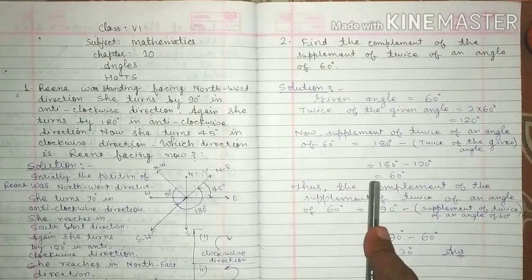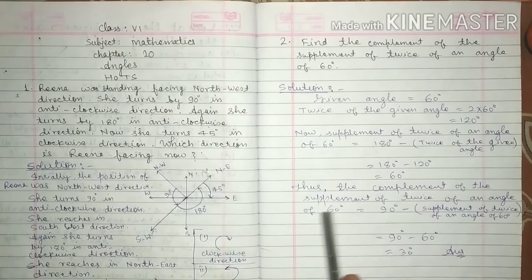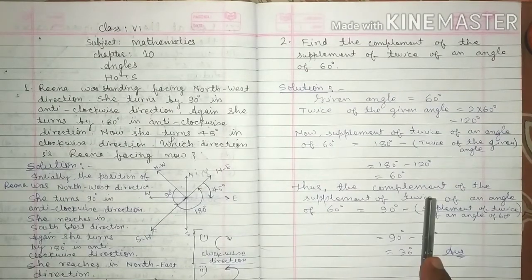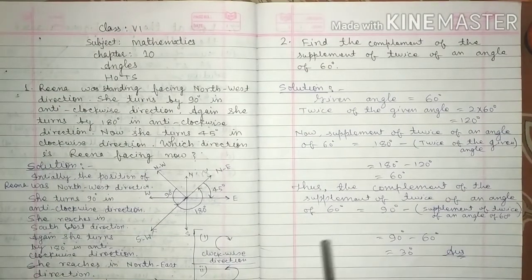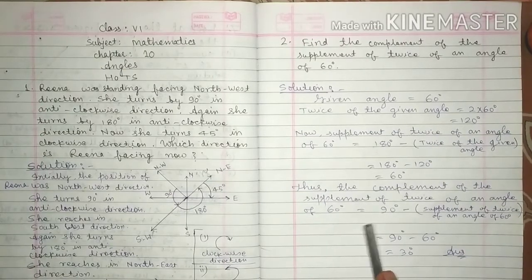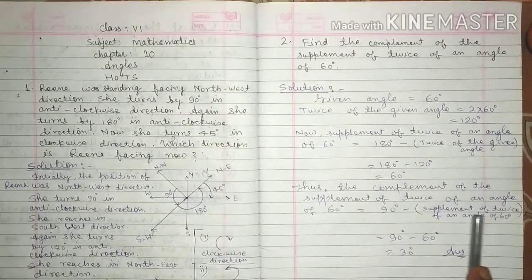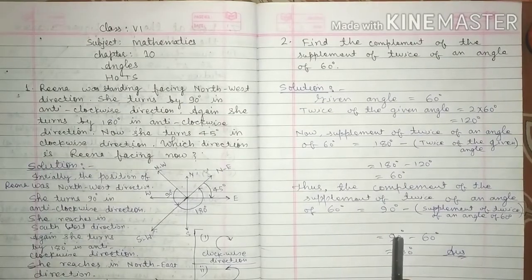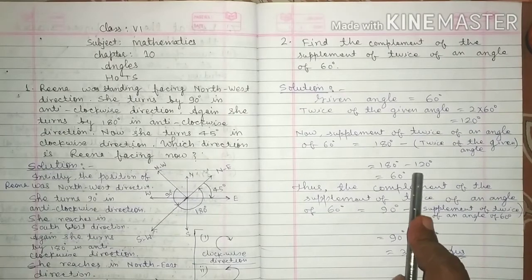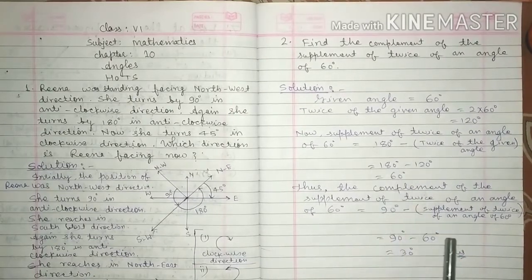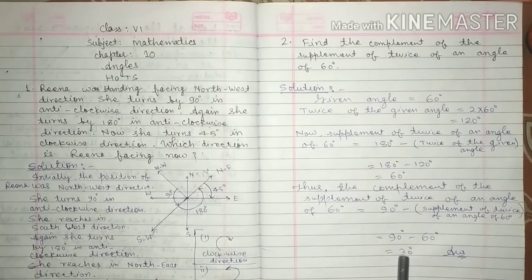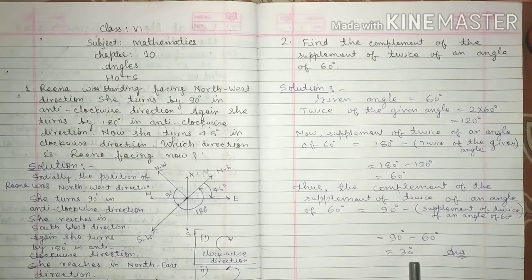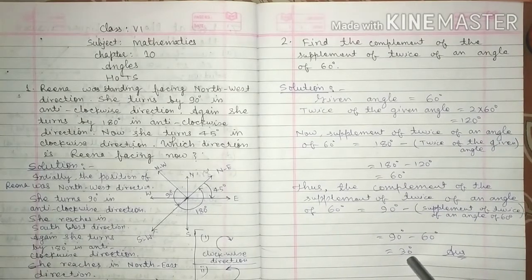We put 120 degrees here, which equals 60 degrees. Now, the complement of the supplement of twice of an angle of 60 degrees equals 90 degrees minus 60 degrees. We write 60 degrees here, so 90 minus 60 equals 30 degrees. Therefore, the complement of the supplement of twice of an angle of 60 degrees is 30 degrees. This is the answer of question number 2.